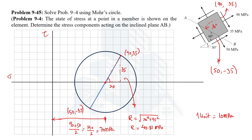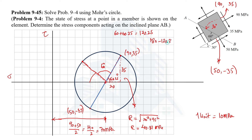So instead of 30°, we use 60° on the Mohr's circle, giving a new radius line at 60° from the reference. To find the angle of the reference radius, we use tan θ = perpendicular/base = 35/20, giving θ = 60.25°. The total angle from the horizontal is 60 + 60.25 = 120.25°, and the remaining angle in the right triangle is 180° − 120.25° = 59.75°.